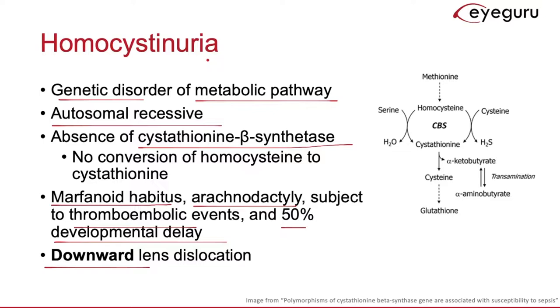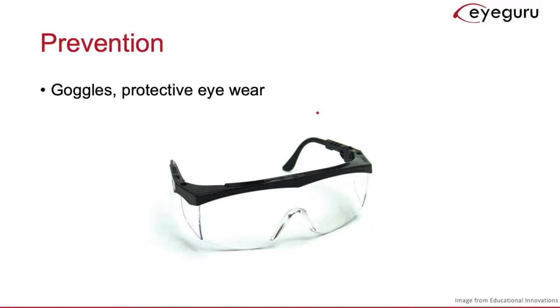Because lens dislocations can be caused by trauma due to disruption of the zonules that normally support the lens, the best way to prevent lens dislocations is to protect the eye. This can often involve goggles or other protective eyewear.